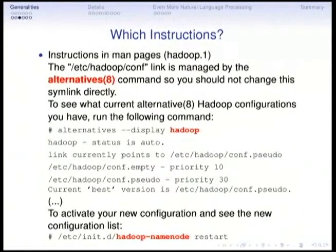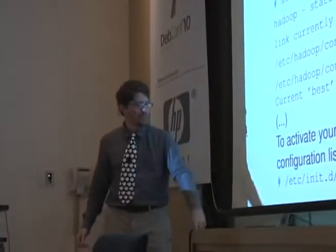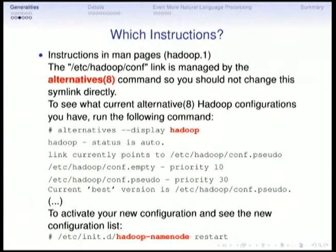Here is an example from the Debian Java team. There is a program called Hadoop. I was following the man page instructions on how to modify an installation. The first thing it says is it's managed by 'alternatives', but now it's called 'update-alternatives'. Then it says 'show Hadoop', but now it's actually called 'Hadoop-conf'. And then it says 'restart Hadoop name node'. These are silly problems I'll hopefully fix on the man page, but the maintainer never realized because the man page was written a long time ago and nobody tried to follow these instructions since then.